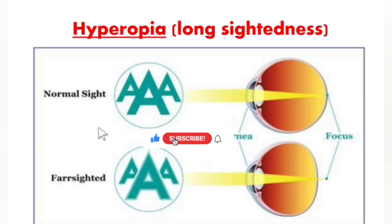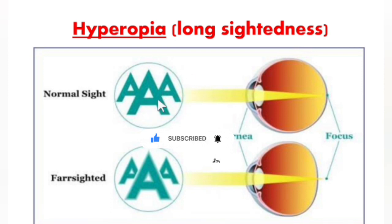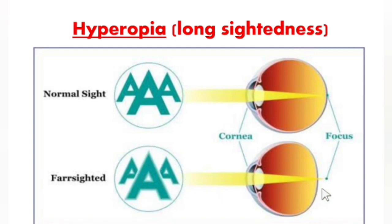As you can see, in normal sight when you are reading something the alphabets are clear because the image is forming on the retina. On the contrary, in the case of a farsighted person, these alphabets look blurred because the image is forming behind the retina.